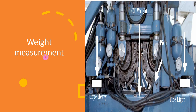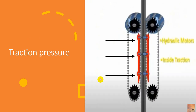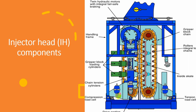Weight measurement can be done by many methods — hydraulically or electrically. For the hydraulic method, to measure both tension and compression, you must have two load cells: a heavy pipe load cell and a light pipe load cell, along with a pivot point. This pivot point makes the injector rest with its weight on these two load cells, so one measures tension and the other measures compression.